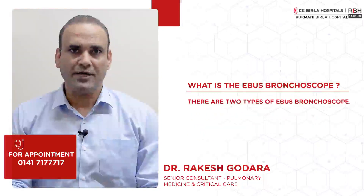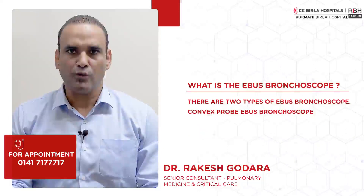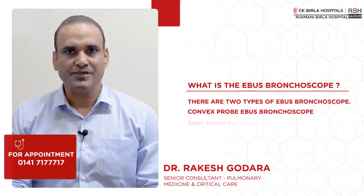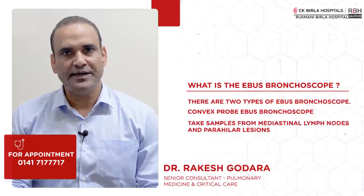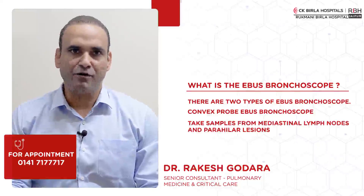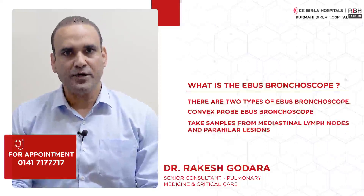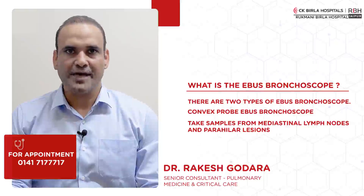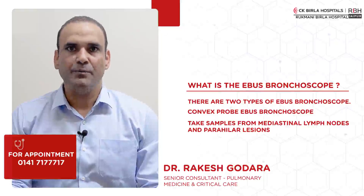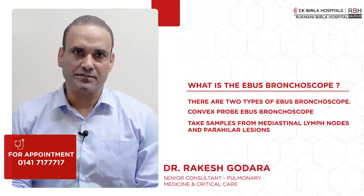There are two types of the EBUS bronchoscope. One is the convex probe EBUS bronchoscope, which is used to take samples from the mediastinal lymph nodes and the para-hilar lesions. Whereas the radial probe EBUS is used to take samples from the peripheral pulmonary nodules or lesions.